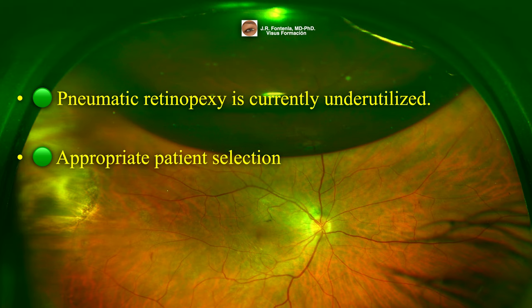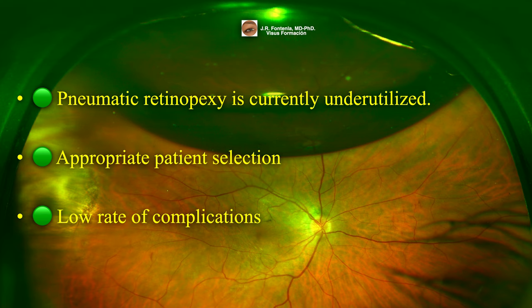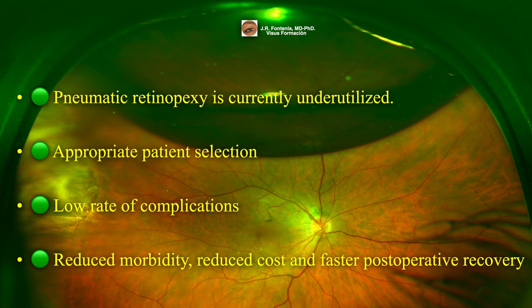Anatomic success rates of over 90% can be achieved when strict selection criteria are applied. There is a low rate of postoperative complications, and intraoperative complications are primarily related to intraocular pressure rise from gas injection or misdirection of gas. In selected cases, pneumatic retinopexy may offer advantages compared to pars plana vitrectomy and scleral buckling, playing an important role in the vitreoretinal surgeon's armamentarium.